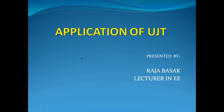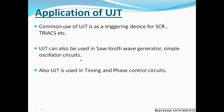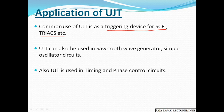Hello everyone. Let's start with the application of UJT. UJT is a triggering device for SCR (silicon control rectifier), TRIAC, etc. SCR and TRIAC are power electronics devices used for switching operation. UJT is also used for sawtooth wave generator circuits or oscillator circuits, and also for timing and phase control circuits.